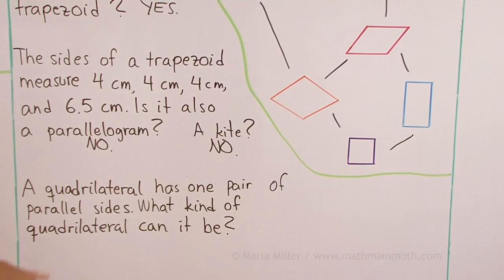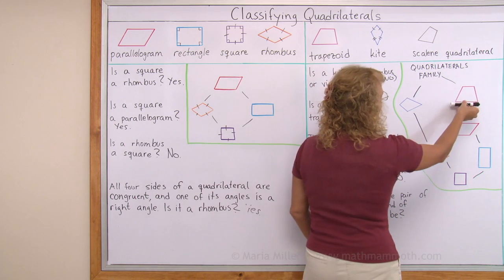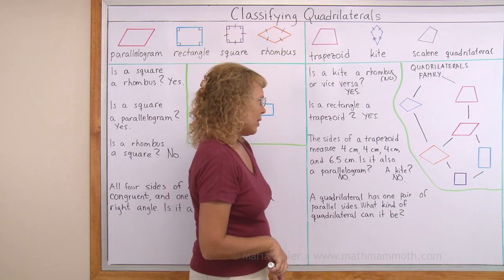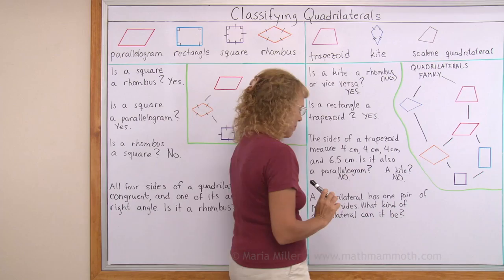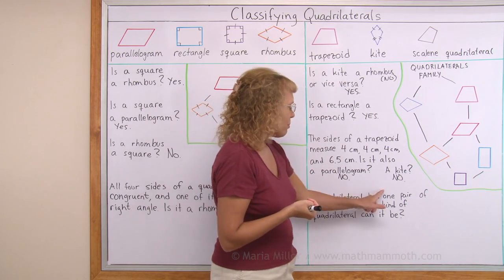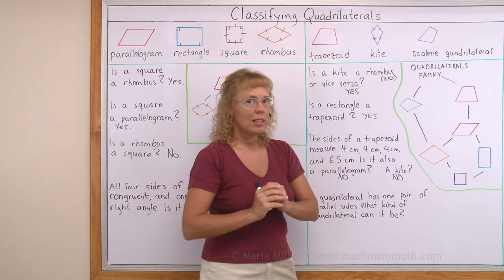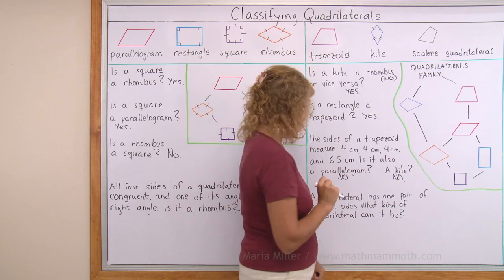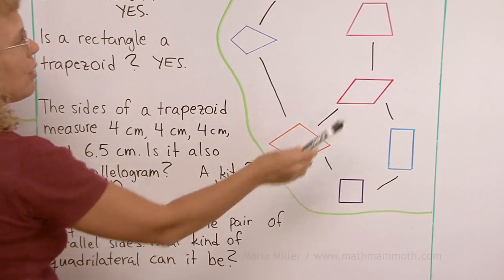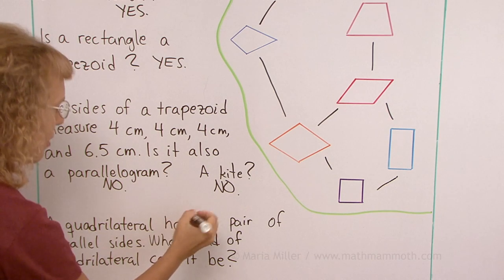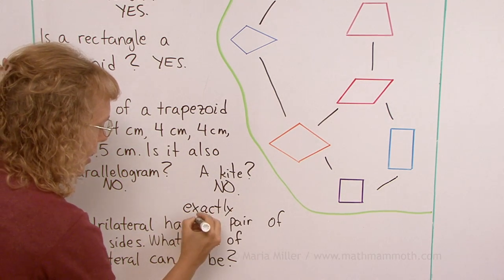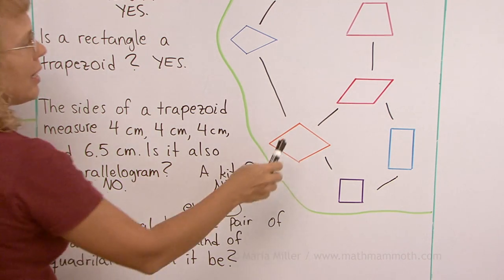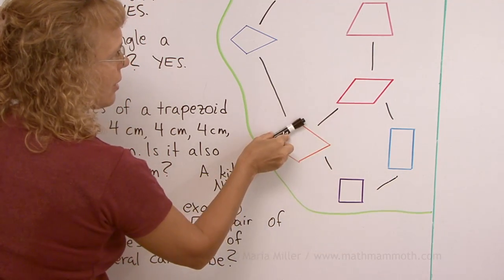A quadrilateral has one pair of parallel sides — what kind of quadrilateral can it be? One pair of parallel sides reminds you of a trapezoid, so it could be a trapezoid. Could it be a parallelogram? If this means exactly one pair of parallel sides — that the other two sides are not parallel — then it cannot be a parallelogram. But if it meant at least one pair, we would have a different answer. If the question means exactly one pair of parallel sides, then it cannot be any of these shapes with two pairs, so it has to be a trapezoid.